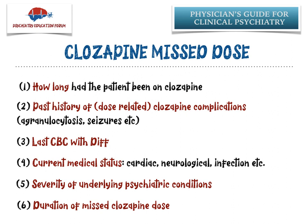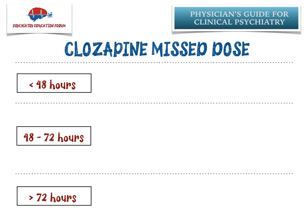The last point, and I think the most important one, is how long the patient has been missing these clozapine doses. Most of the guidelines I reviewed — Canadian, Australian, and the Maudsley guidelines from the UK — shared a common theme. They all discuss three duration windows: less than 48 hours, 48 to 72 hours, or more than 72 hours of missed doses.